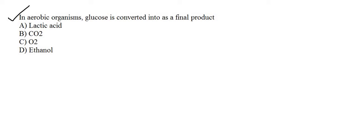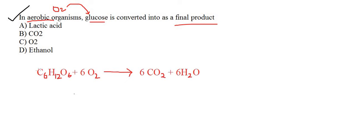Next question: in aerobic organisms, glucose is converted into what final product? Aerobic means the organism involves oxygen in its metabolism. The equation for aerobic glucose breakdown is: C6H12O6 + 6O2 → 6CO2 + 6H2O. So the final products are carbon dioxide (CO2) and water (H2O). Therefore option B is the right answer.